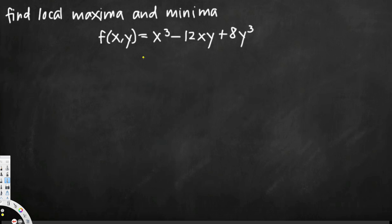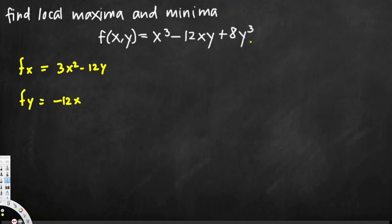To do that, let's take the first partial derivative fx — the derivative of this function with respect to x. When we take the derivative with respect to x, we treat y as a constant, so this is going to become 3x squared, minus 12y (since x becomes 1), and the constant term becomes 0. Now for the partial derivative with respect to y, we treat x as a constant, so the first term becomes 0, then negative 12x, and here we get 8 times 3, which is 24y squared.